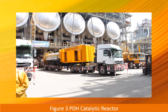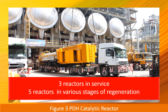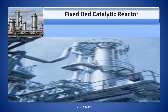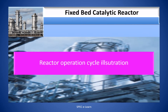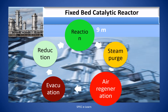Shown in this figure is the reactor arrangement in the plant. A set of 8 reactors are used. At any point of time, 3 reactors are in service and 5 reactors are in various stages of regeneration. A reactor remains in reaction mode for 9 minutes and then moves to the regeneration cycle, which consists of steaming and air regeneration lasting 9 minutes, followed by evacuation and reduction lasting 6 minutes. Thus, the total regeneration cycle time is 15 minutes, and the reactor works on a 24-minute cycle consisting of 9 minutes reaction and 15 minutes regeneration.